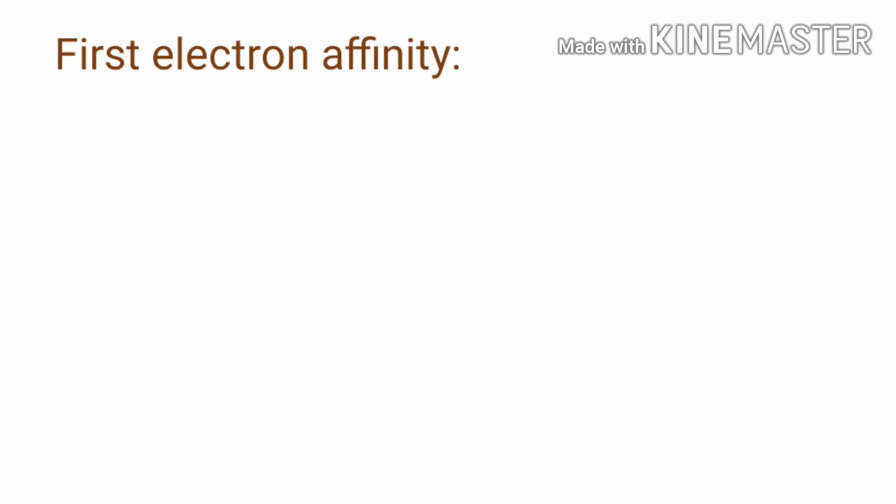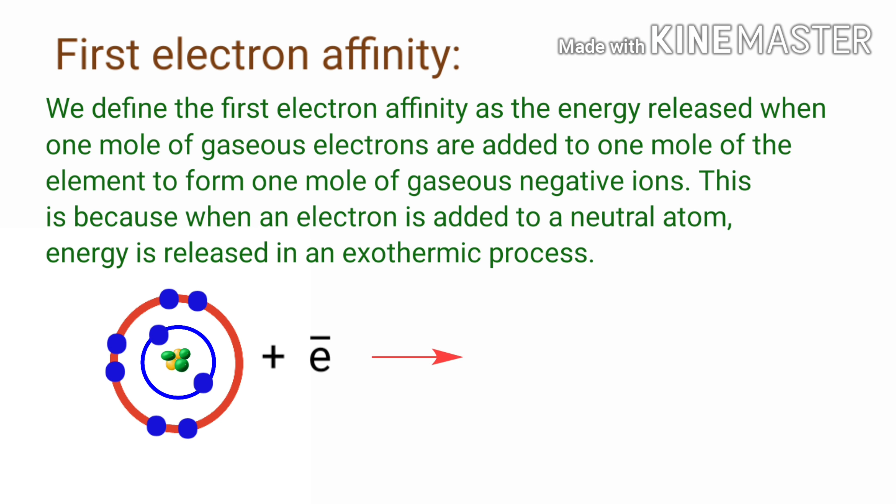First Electron Affinity. We define the first electron affinity as the energy released when one mole of gaseous electrons are added to one mole of the element to form one mole of gaseous negative ions. This is because when an electron is added to a neutral atom, energy is released in an exothermic process.